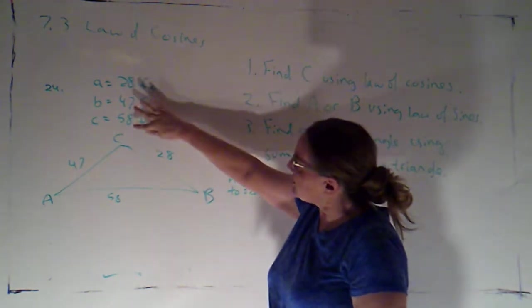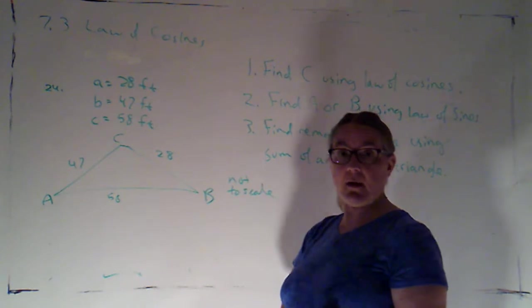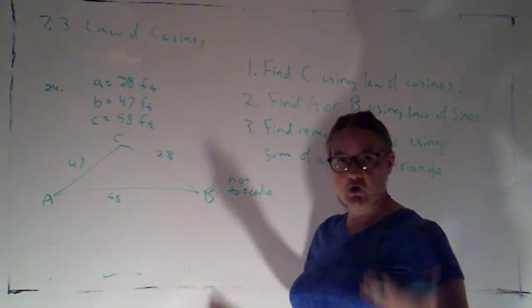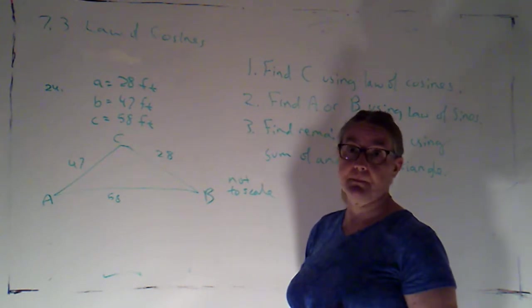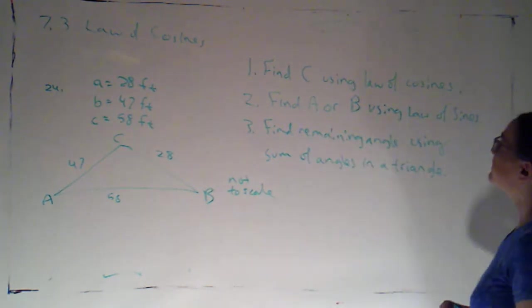Notice all of these are to two significant digits. So I'm going to be finding all of my angles to two significant digits, and that just means to the nearest degree.